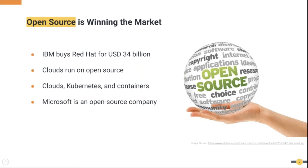If we look at the cloud, it mostly runs on Linux. Even Azure has Linux running more than 50% of its workloads. Cloud-native technologies like Kubernetes and Docker are mainly open source. Even Microsoft, which was the main company that played against open source, has gradually become an open source company — in 2018 they acquired GitHub, and in 2019 they released their Edge browser as open source. These are kind of highlights showing how open source is winning the market.